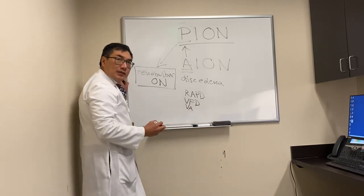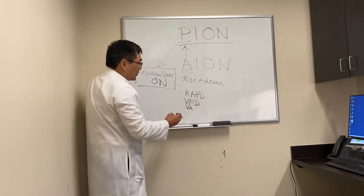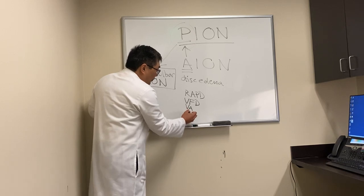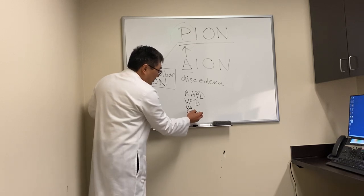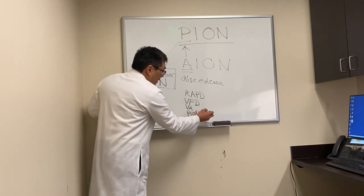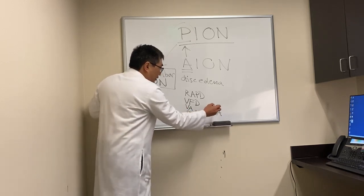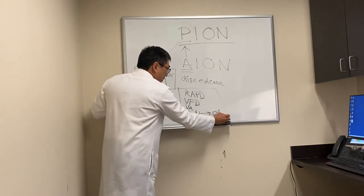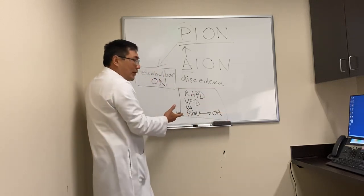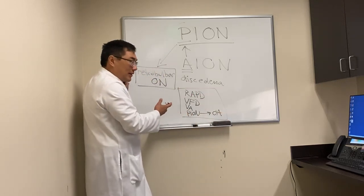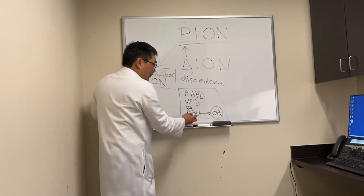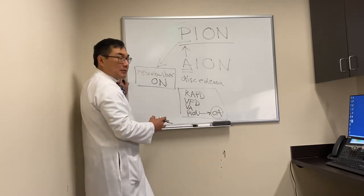We want to have a visual field defect corresponding with a nerve fiber layer loss, or we might have central loss with reduced central acuity and a central scotoma. The disc has to be normal initially in PION, but over time the nerve would turn pale.